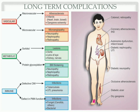Immune system complications include defective cell-mediated immunity, which mainly makes an individual prone to infections. This predisposes the individual to tuberculosis, UTI — urinary tract infection — and pneumonia. Where there is accumulation of glucose in the urine or urinary bladder, there is a chance of bacterial infection because bacteria can easily grow in glucose — it acts as a medium for bacterial growth.